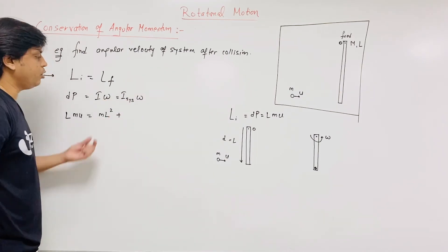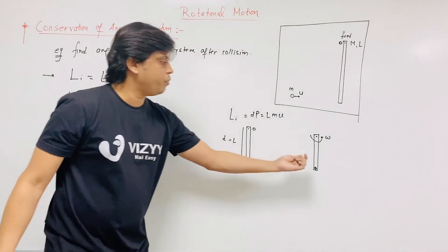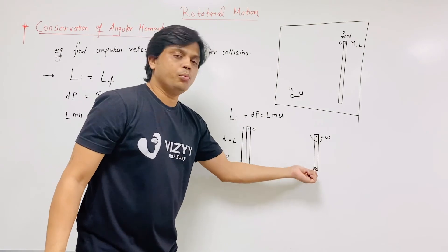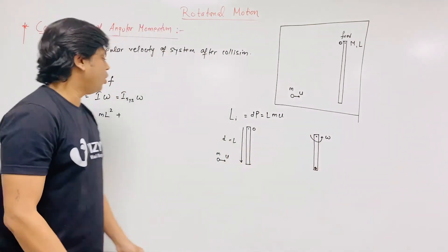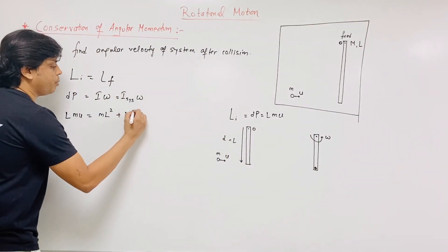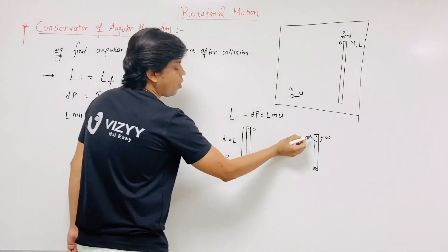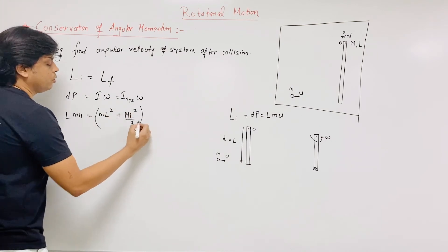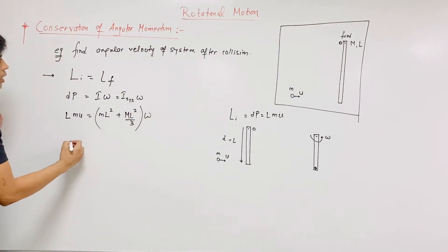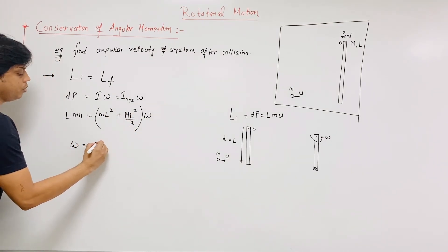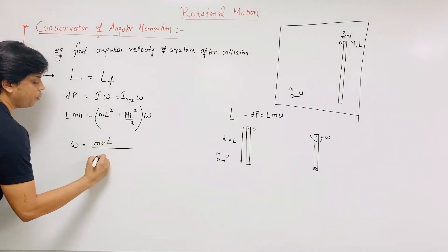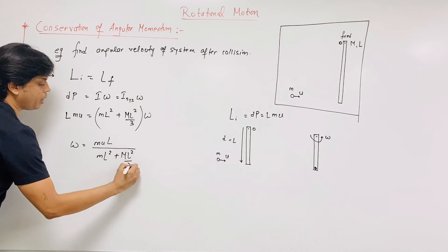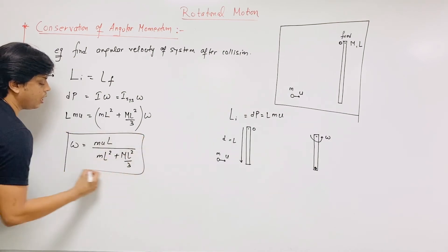So you have to calculate omega. Omega is equal to m u L upon m L square plus capital M L square by 3. This is your final answer.